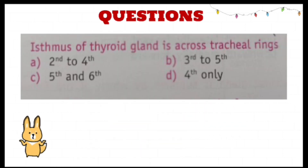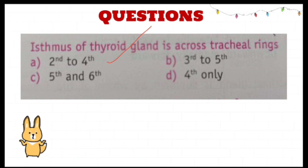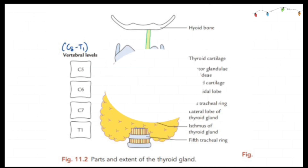Now for a question: the isthmus of the thyroid gland crosses which tracheal rings? As we discussed, it is the second to fourth tracheal rings — a straightforward question. You can start doing more questions from this part. That's all for today; thank you for watching. Do subscribe to our channel.